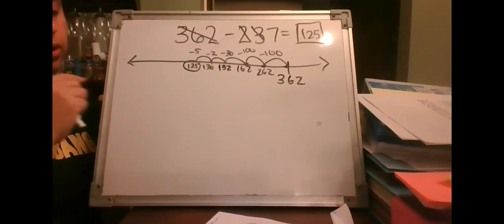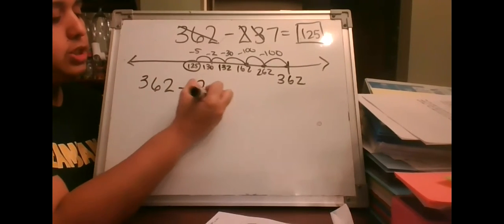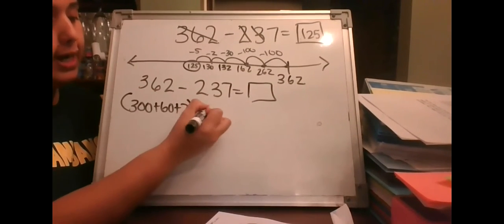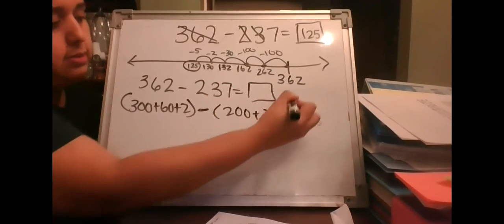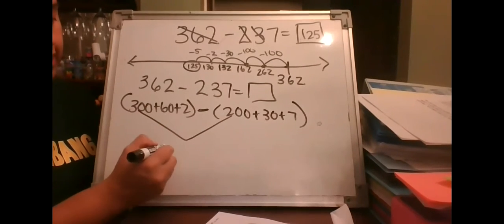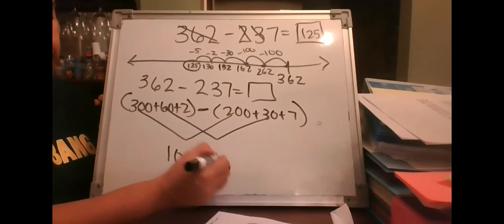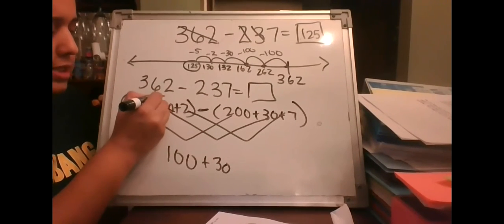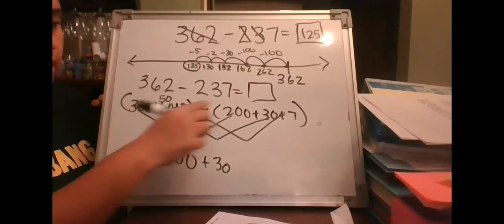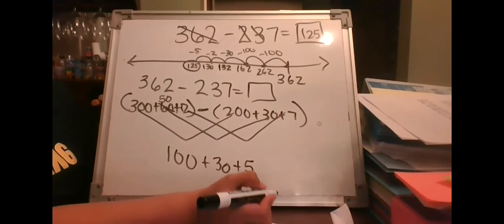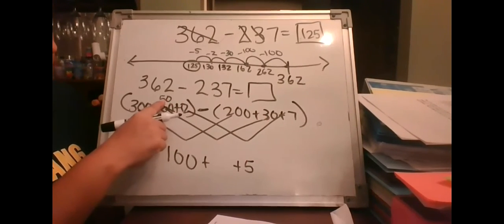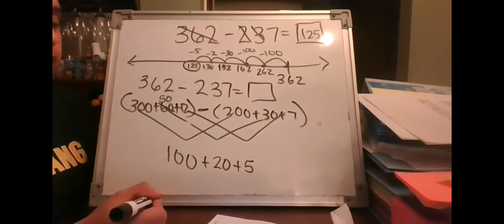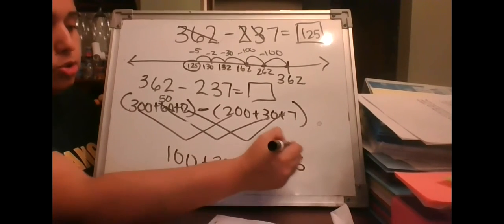Using expanded form: 362 is 300 plus 60 plus 2, minus 237 which is 200 plus 30 plus 7. Subtract hundreds: 100. Subtract tens: 60 minus 30 is 30. But 2 minus 7 — you can't do that, so borrow a 10: 12 minus 7 is 5. Since we borrowed, the tens become 50 minus 30 which is 20. Answer is 125.